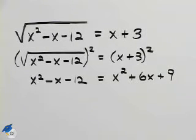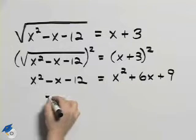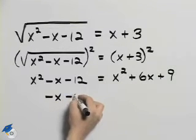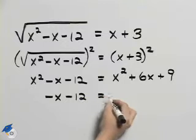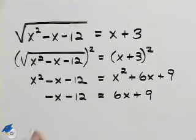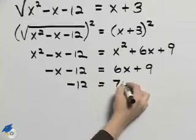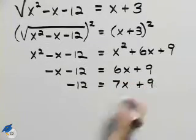I can now simplify this. I can subtract an x squared from both sides and when I do that I'll end up with minus x minus 12 is equal to 6x plus 9. I'll then add x to both sides and I'll end up with negative 12 equals 7x plus 9.